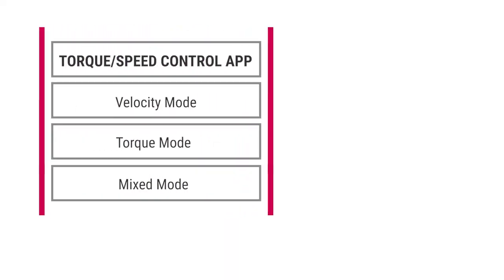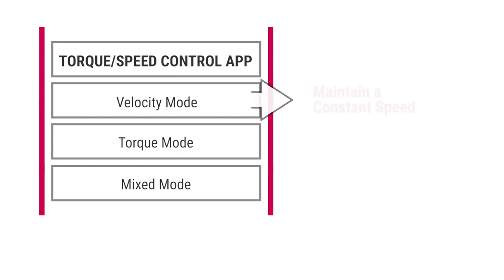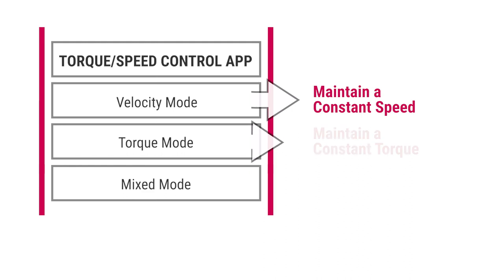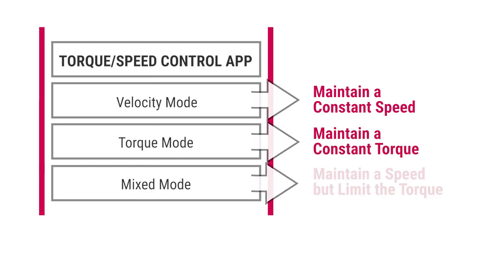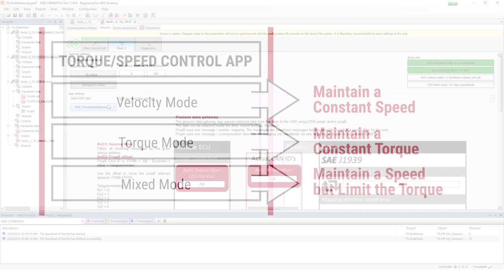The Torque Speed Control app offers three operating modes. Velocity mode is useful if you want to maintain a constant speed. Torque mode is useful if you want to maintain a constant torque. Mix mode is useful if you want to maintain a constant speed but also limit the torque so you don't damage your equipment.